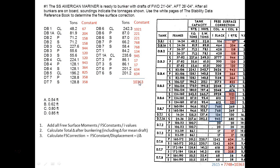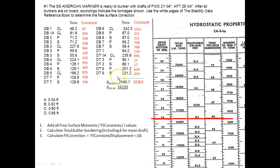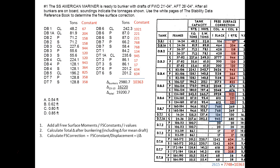Now we've done step one. Step two is to calculate the total displacement. At the beginning of the problem the vessel had certain drafts and was already displacing water, and then we bunkered additional tonnage. The displacement added by the bunkers is 2,980.7 tons. Adding that to the ship's initial displacement: with drafts of 21'04" and 26'04", the mean draft is 23'10", which from the table gives a total displacement of approximately 19,200.1 tons.